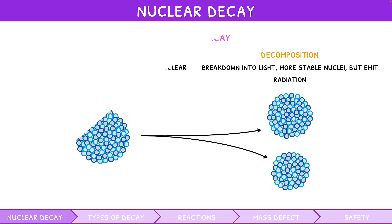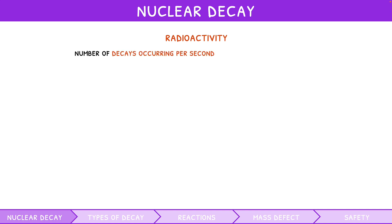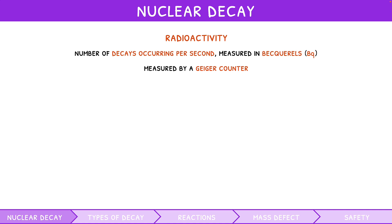The amount of nuclear decay that occurs is termed radioactivity. This is officially defined as the number of decays occurring per second, measured in becquerels. These measurements are typically taken by a Geiger counter, and you should understand that radioactive decay is a random process. However, radioactive decay is constantly occurring around us, called background radiation.